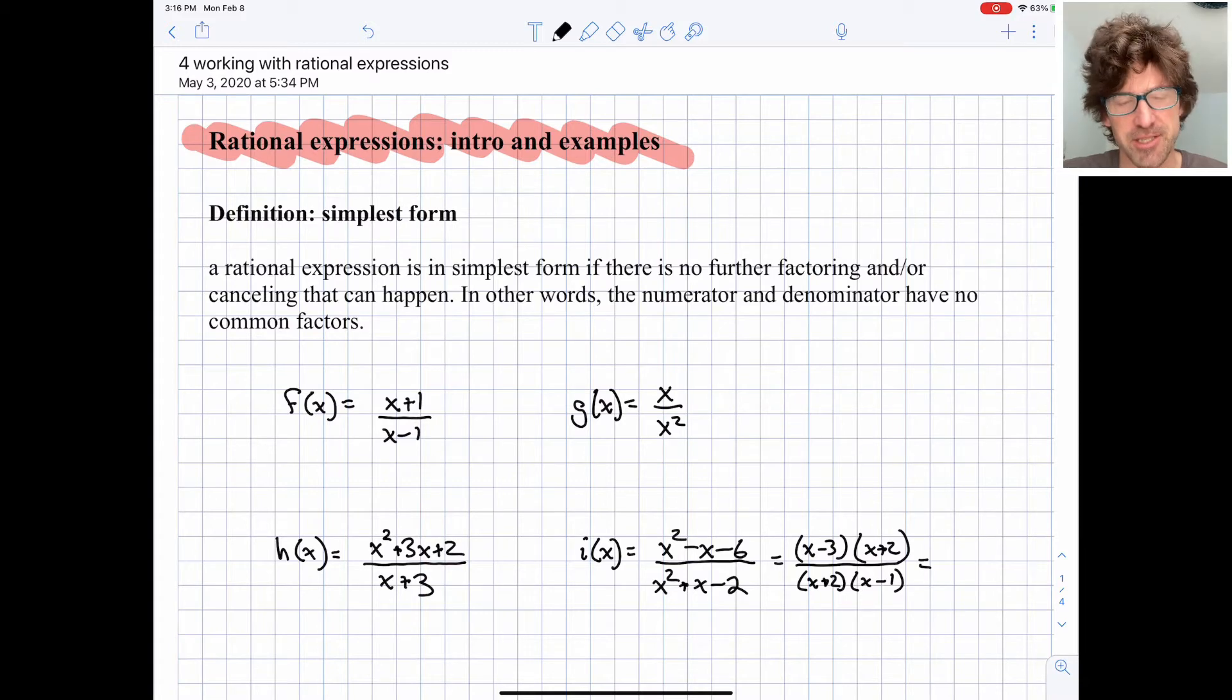We'll be looking at trying to put expressions into simplest form. A rational expression is in simplest form if there is no further factoring and or canceling that can happen. So we factored as much as we can and then we've canceled out as many terms as we can. In other words, the numerator and denominator have no common factors that could be canceled out.